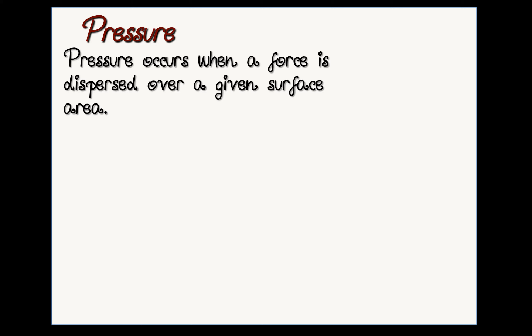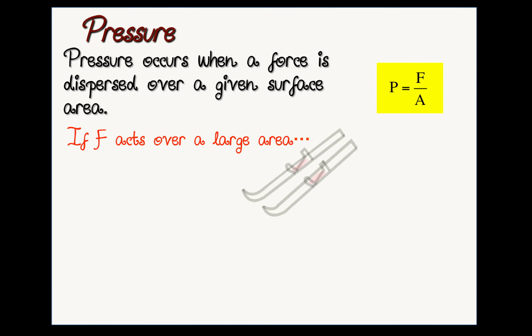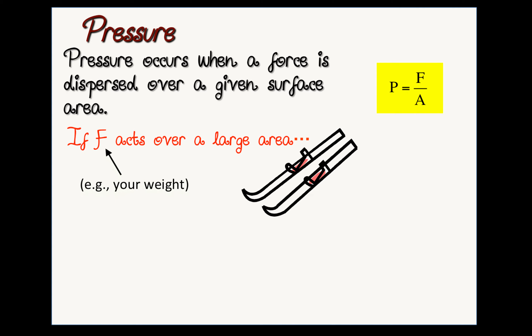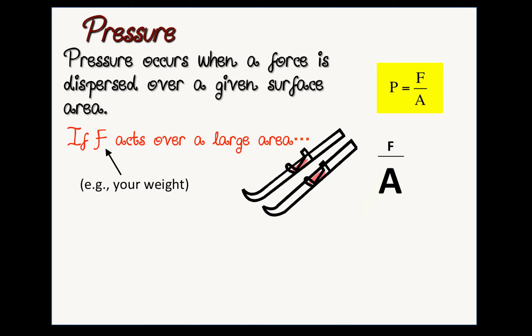Pressure occurs when a force is dispersed over a given surface area. In other words, pressure equals force divided by area. What happens if that force acts over a large area, like your weight on a pair of skis? In that case, the force, which is your weight, is divided by a very large area, which results in a small pressure.